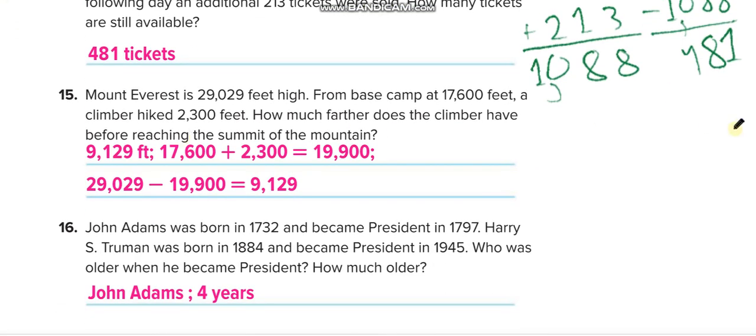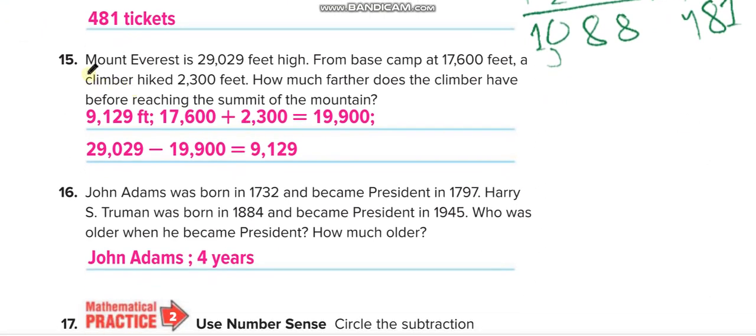Again this question: Mount Everest is 29,029 feet high. From base camp at 17,600 feet, a climber hiked 2,300 feet. How much farther does the climber have before reaching the summit of the mountain? First you will add these two. That is equal to 19,900. Then you will minus it from the total. So 29,029 minus 19,900 equals 9,129.